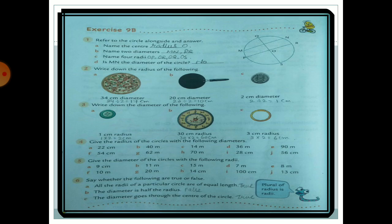Exercise 9B, Question 1: Refer to the circle alongside and answer. Name the center — the center is O. Name the two diameters — MN and PR. The radii (plural of radius) are OP, OR, OQ, and OS. Is MN the diameter of the circle? No.